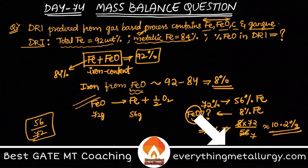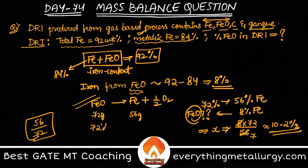You can also write the mass fraction as 56/72. Not 100%, but in 72% of FeO, because it's easy for us to work with 72% of this compound — we have 56% of iron in it.